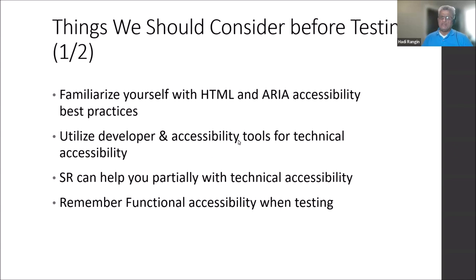However, accessibility tools are limited. In the past, I said they might catch up to 30% of issues; using AI techniques maybe a little more. But this definitely does not substitute for manual checking. We still need manual testing. A screen reader can help with partial testing, but it is not something we should rely on exclusively for testing — and that's your answer right there.